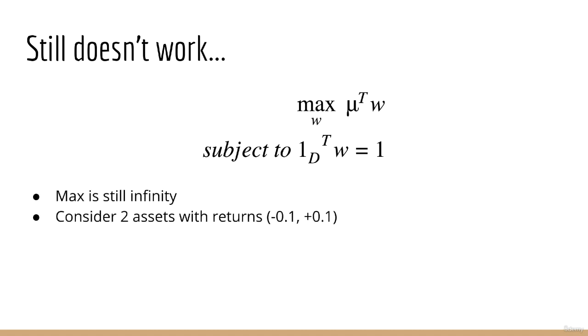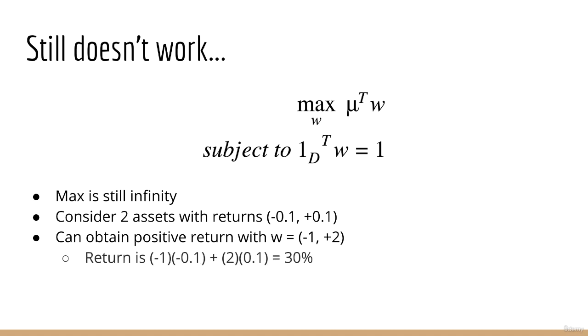To see this, suppose we just have two assets with returns minus 0.1 and plus 0.1. Well, we can obtain a positive return by shorting the first asset and going long on the second asset. For example, let's say we put minus 100% into asset 1 and 200% into asset 2. In this case, our return will be minus 1 times minus 0.1 plus 2 times 0.1, which is equal to 0.3 or 30%.